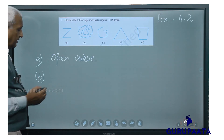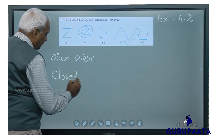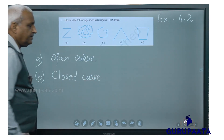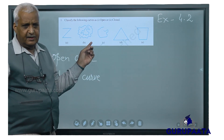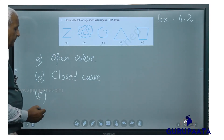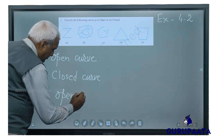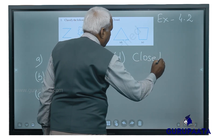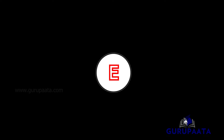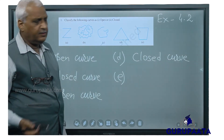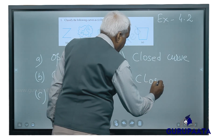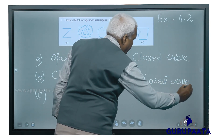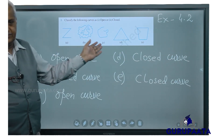A is an open curve. B is a closed curve — if you take any point and follow the line, the last point will be on the same starting point, that is a closed curve. C is a closed curve. D is a closed curve. E is also a closed curve. With this we have finished question number 1.